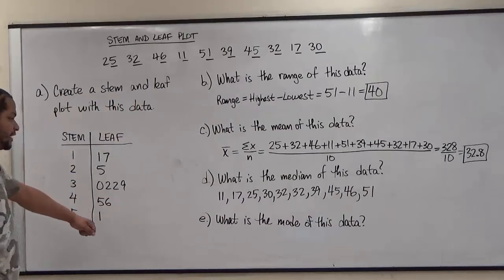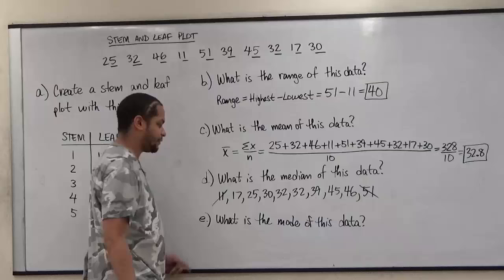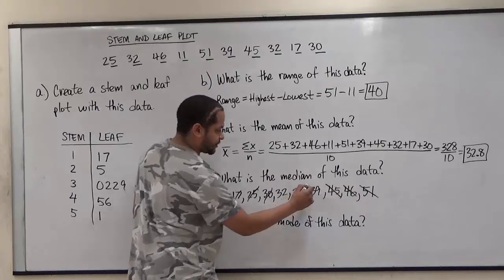What we want to do to get the median is keep knocking one off of each side until we get to the center. We're going to knock off this eleven with this fifty-one. Then we're going to knock off this seventeen with this forty-six and continue moving in until we close in on two or just one. So the twenty-five with the forty-five, the thirty with the thirty-nine, and we're left with these two thirty-twos.